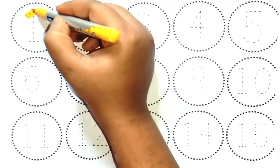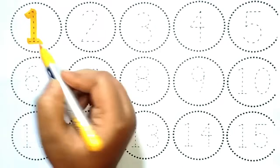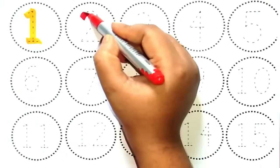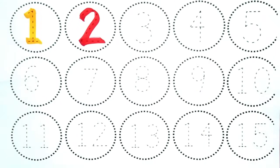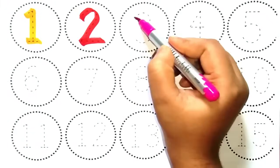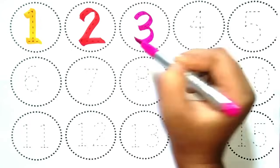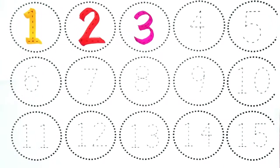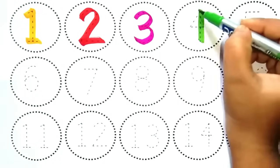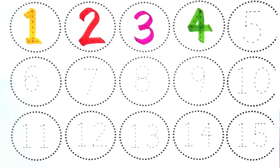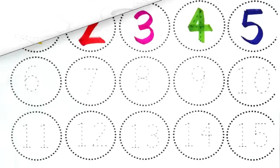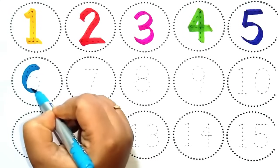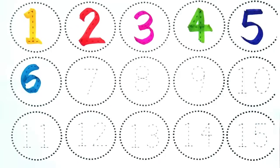One, yeh hai number one. Two, yeh hai number two. Three, yeh hai number three. Four, yeh hai number four. Five, yeh hai number five. Six, yeh hai number six.